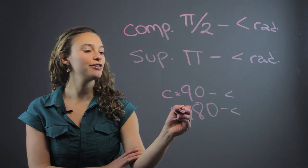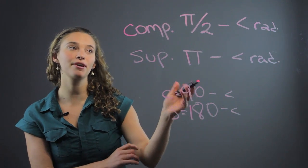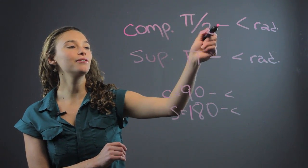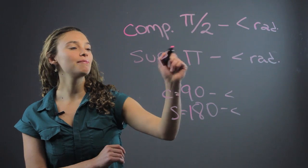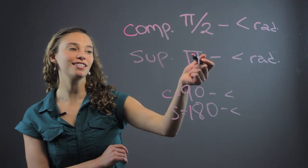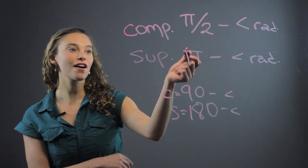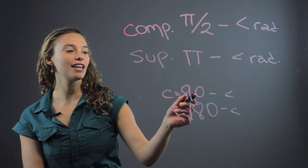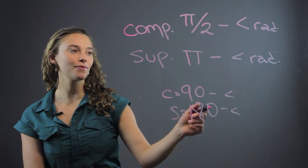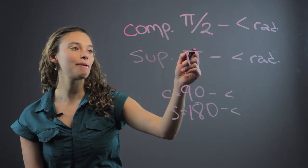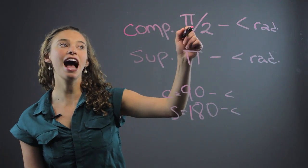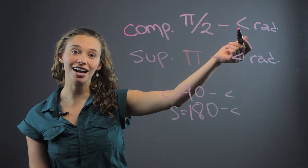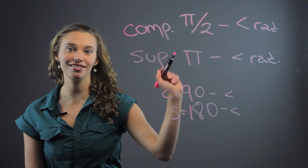But when you're using radians, you can't use these numbers — you have to think of it like a circle. Pi divided by 2 for complementary, or supplementary is just pi, because complementary is half of supplementary, just like 90 is half of 180. That's an easier way to remember: supplementary is pi, and complementary is half of that, pi divided by 2. Then you just subtract the angle and make sure it's in radians, not degrees.